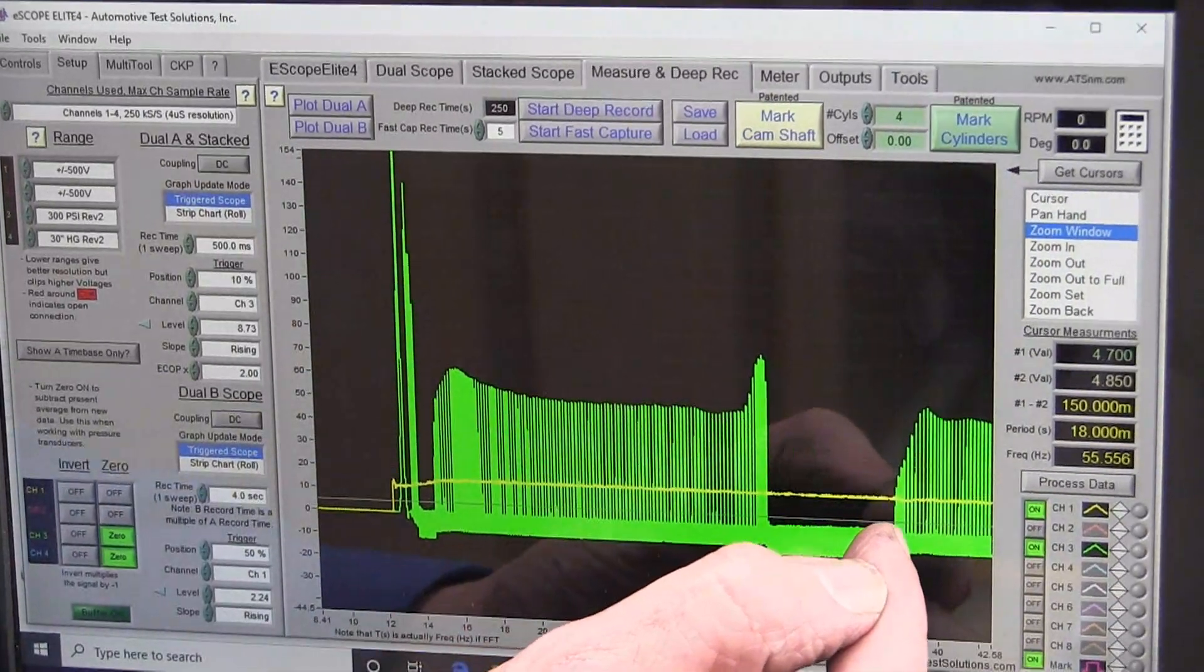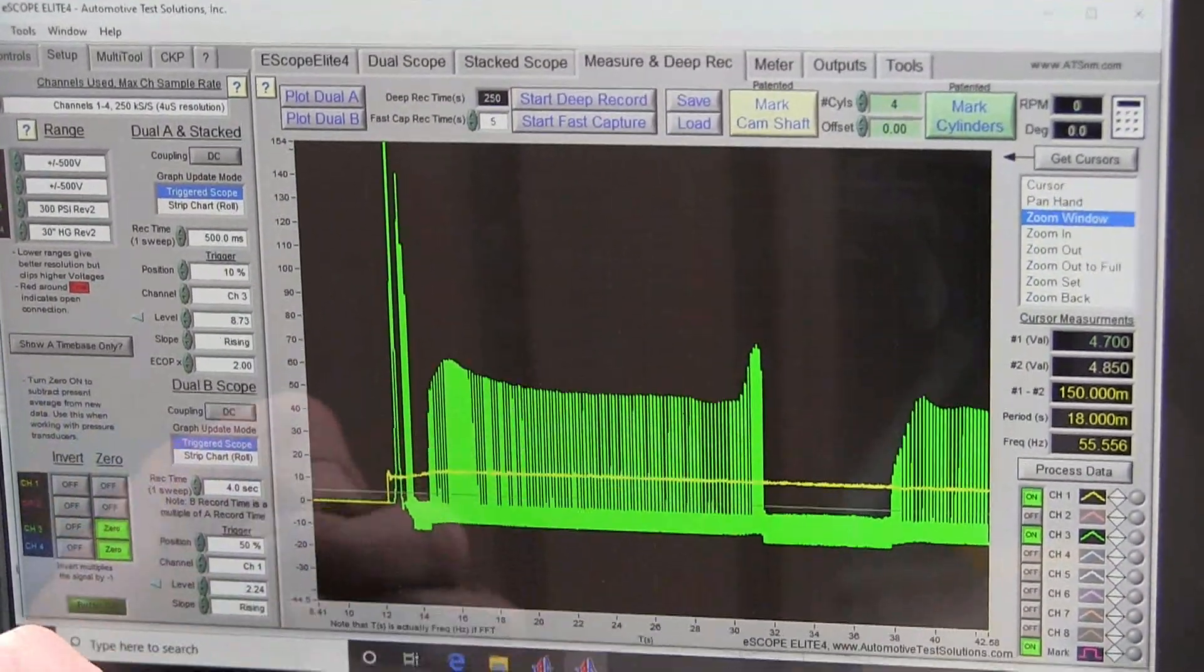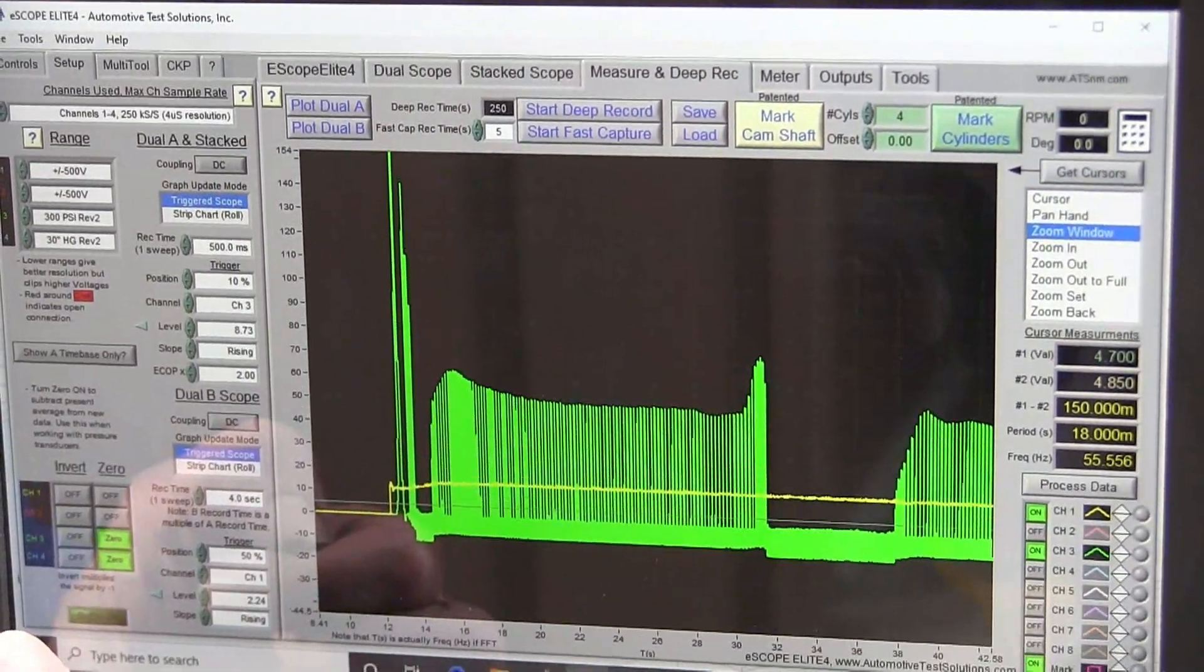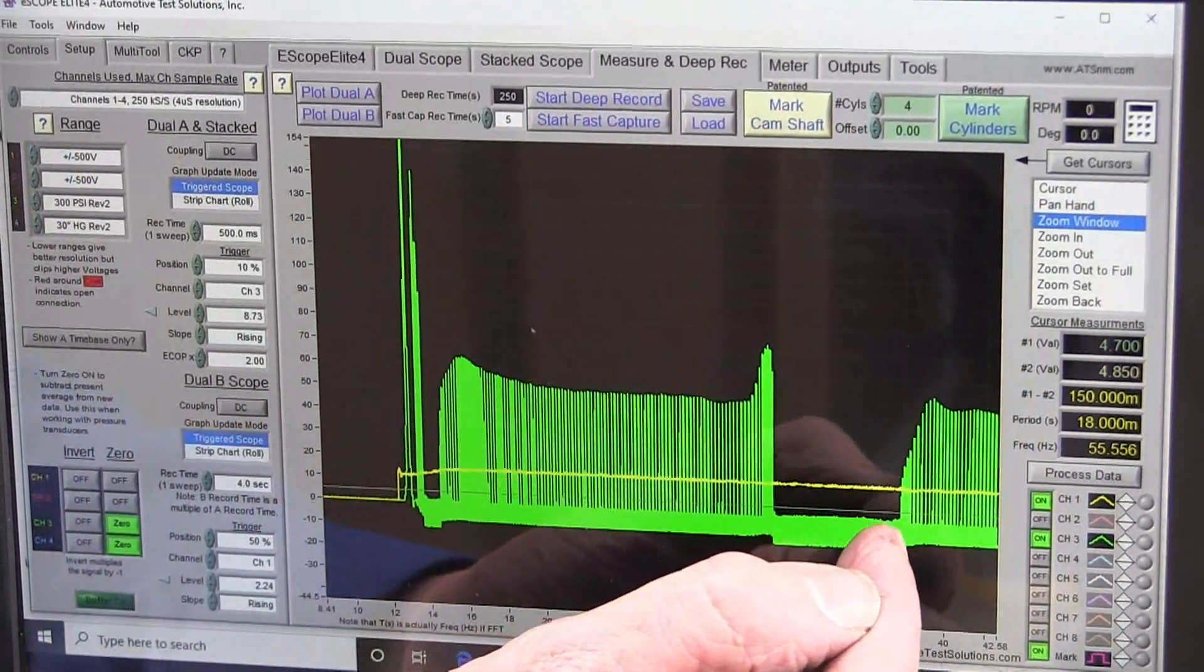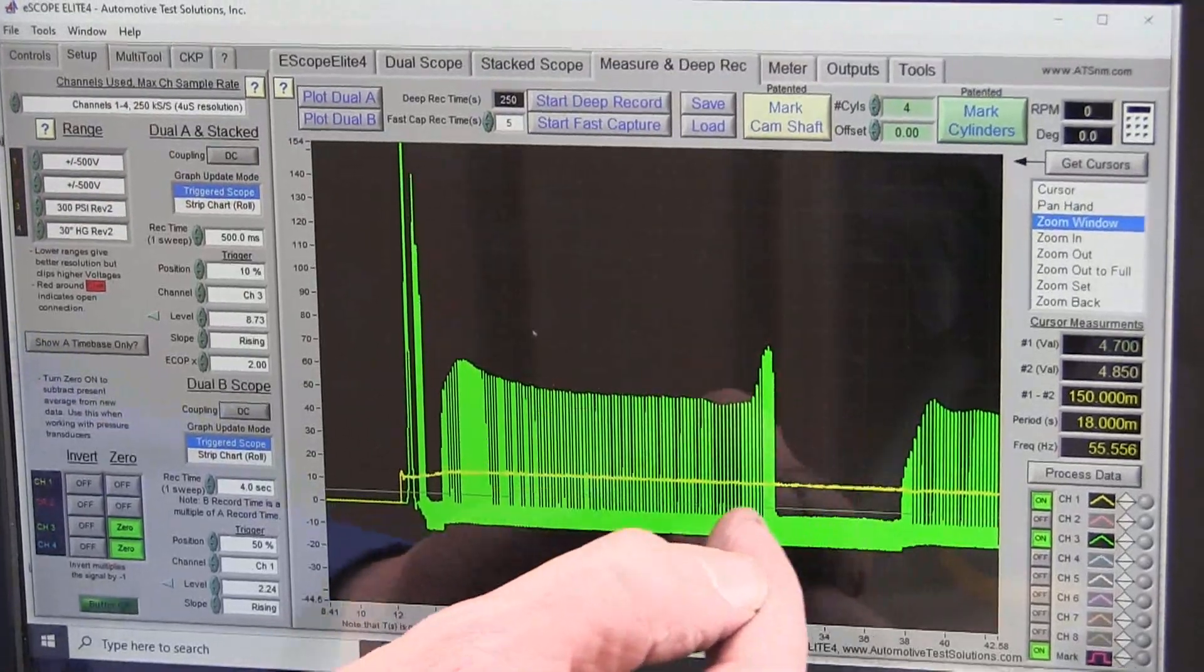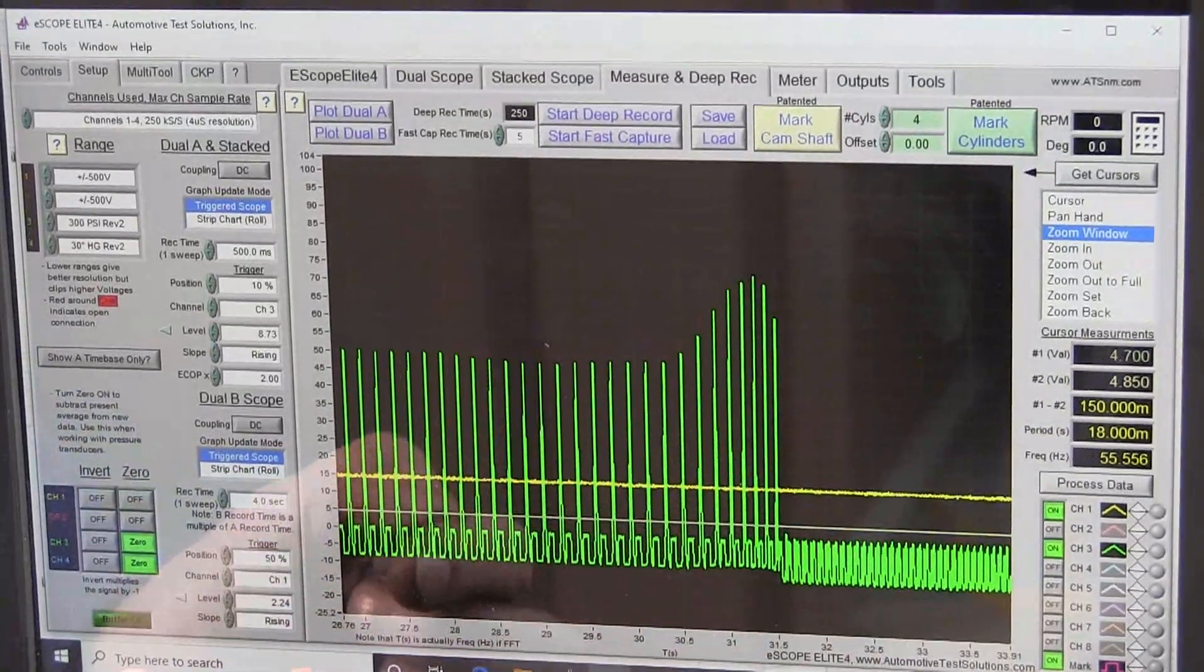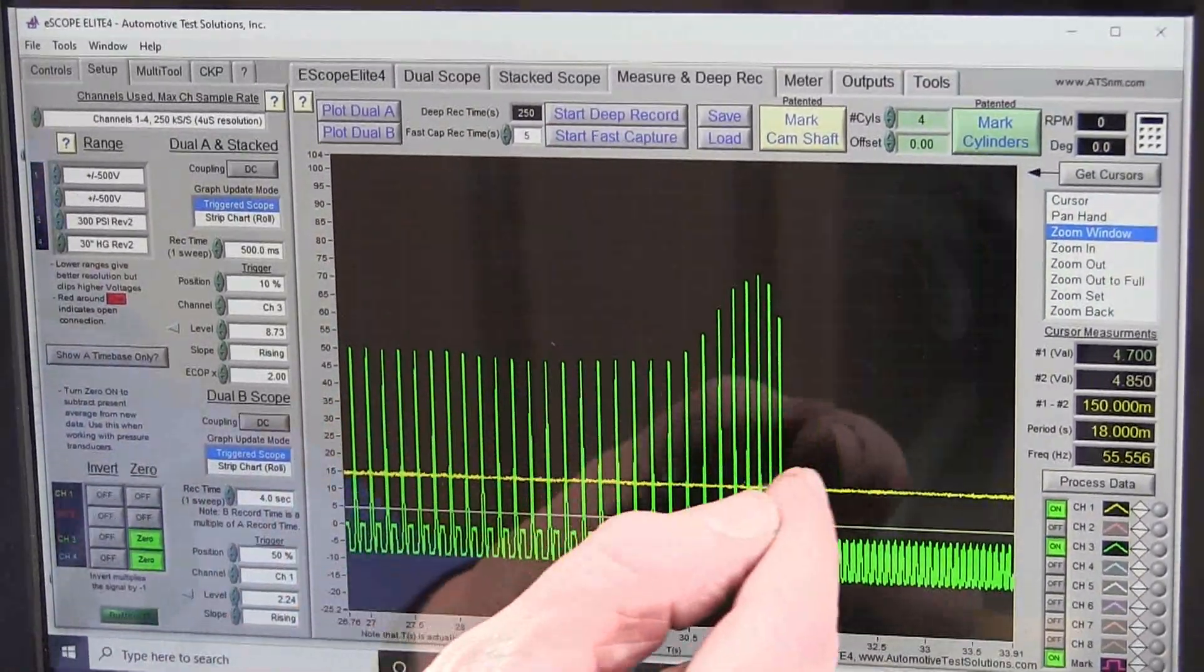And right here we can see where the lifter deactivated, or the pin unlocked the two halves of the lifter from each other. Now the lifters are sliding in within one another, and this is the area where we're going to have high vacuum.